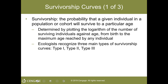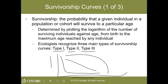On to survivorship. The probability that a given individual in a population or cohort will survive to a particular age is plotted as the logarithm (log base 10) of the number of surviving individuals against age, from birth to the maximum age reached by any individual. This is how we get the survivorship curve. There are three main survivorship curves recognized by ecologists: the Type 1, Type 2, and Type 3 survivorship curves. Survivorship is on the x-axis and the number of survivors on a log scale is on the y-axis.